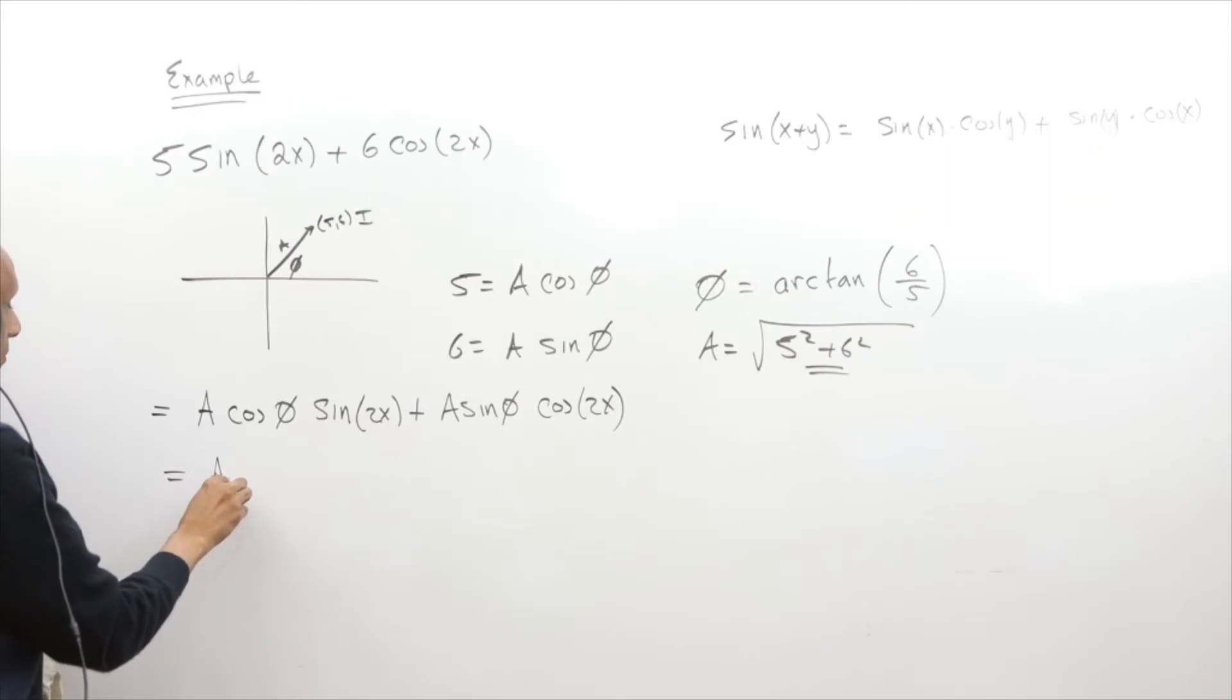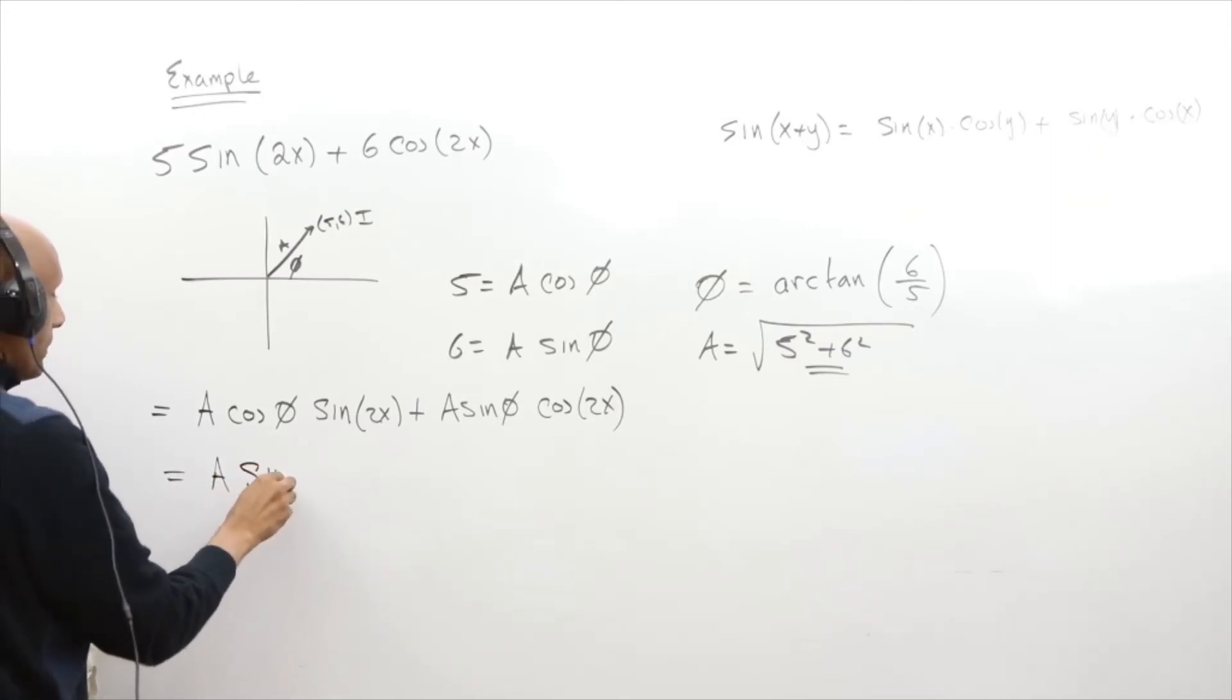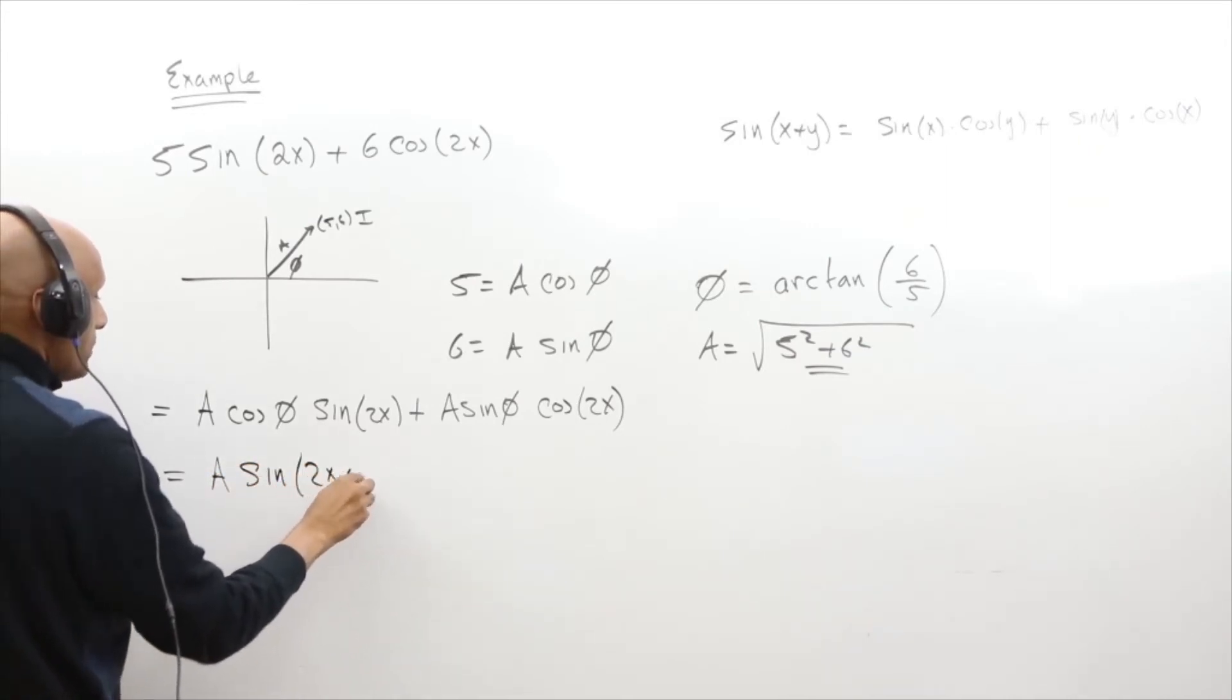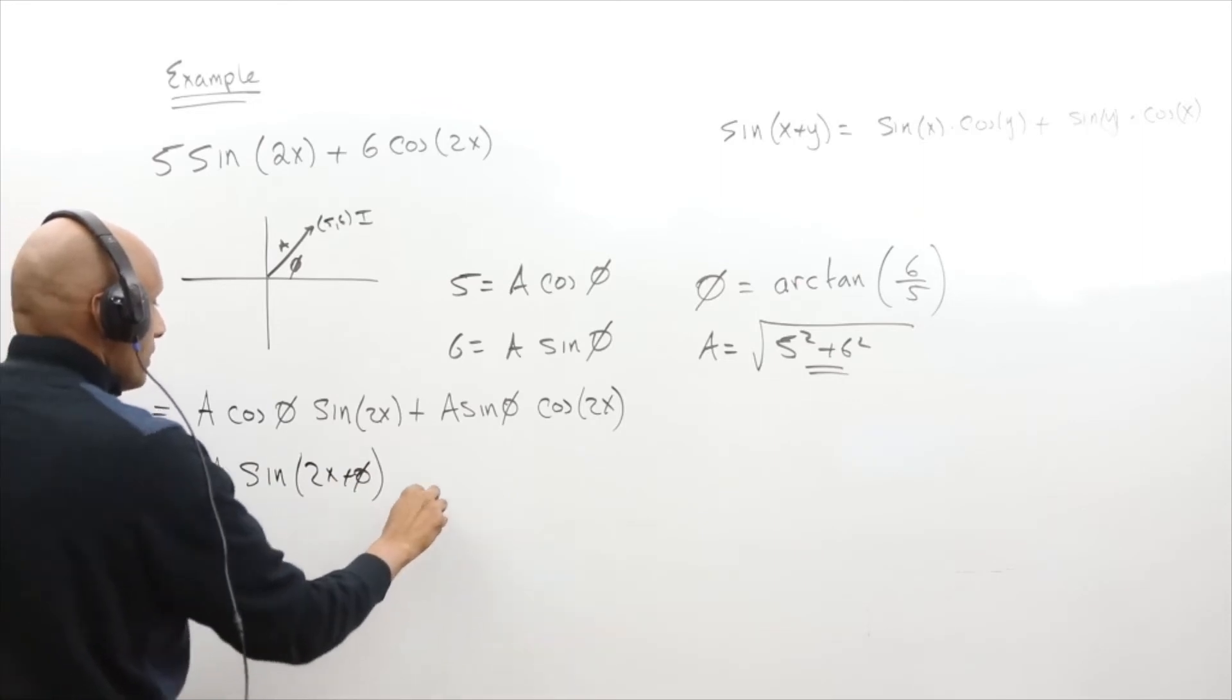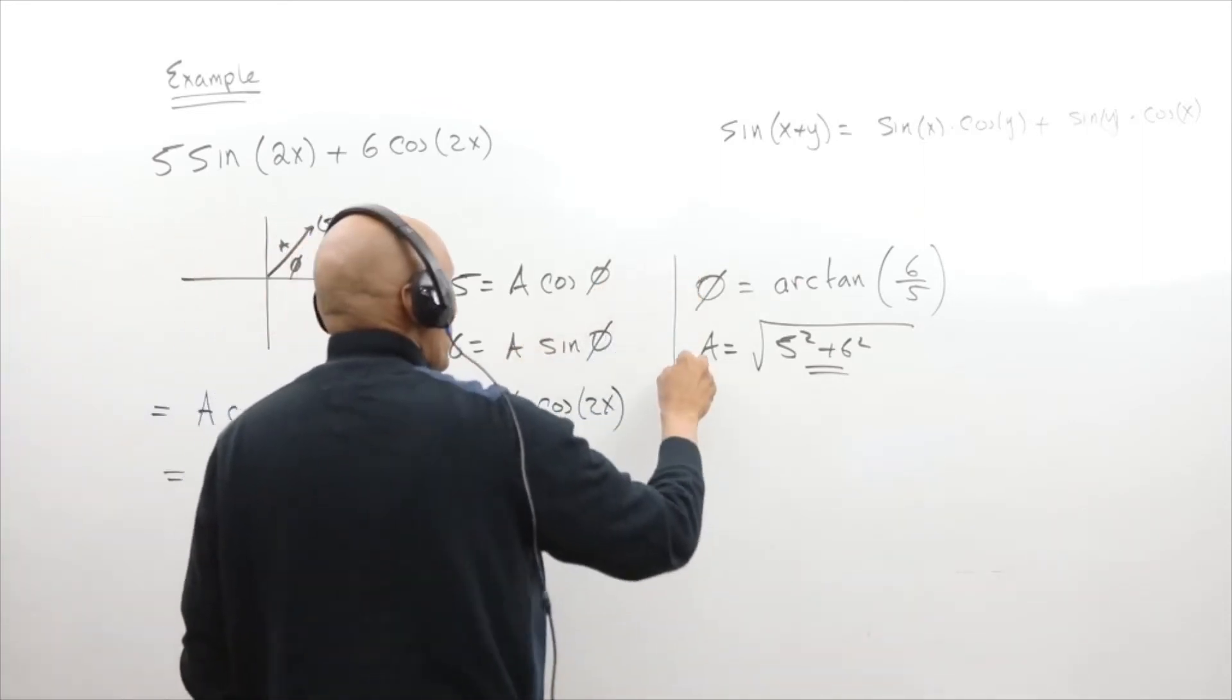So that's really nothing more than the double angle formula of sine of 2x plus phi, where A and phi are given like this.